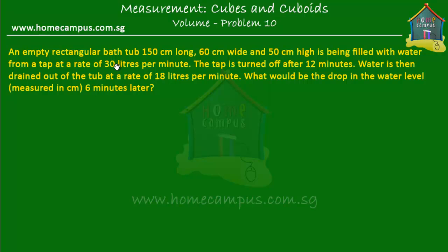An empty rectangular bathtub, 150 centimeters long, 60 centimeters wide, and 50 centimeters high is being filled with water from a tap at a rate of 30 liters per minute. The tap is turned off after 12 minutes. Water is then drained out of the tub at a rate of 18 liters per minute. What would be the drop in the water level measured in centimeters six minutes later?